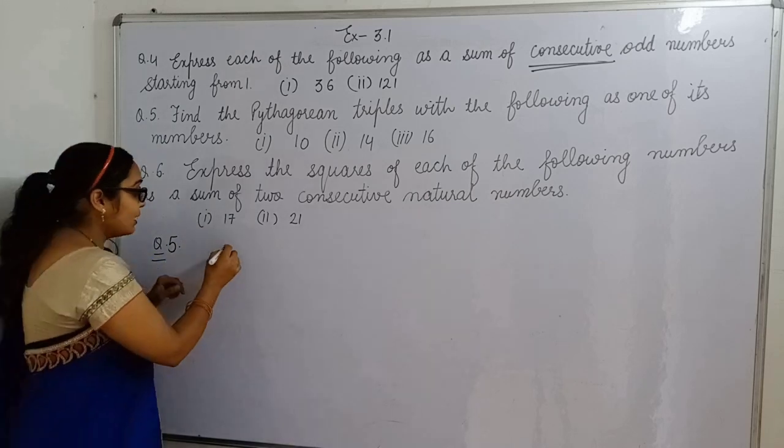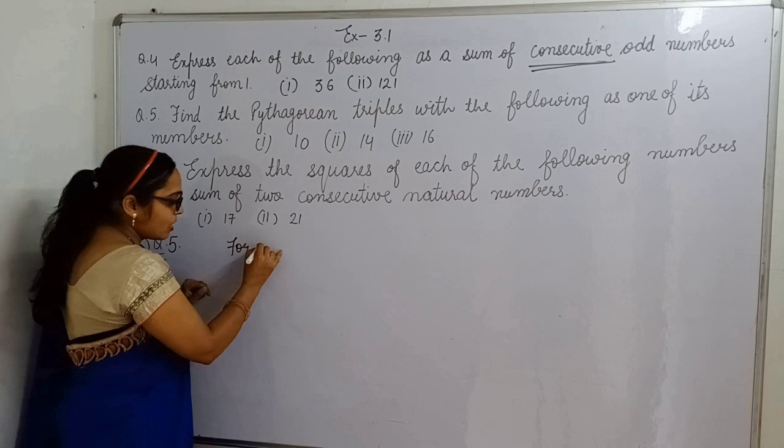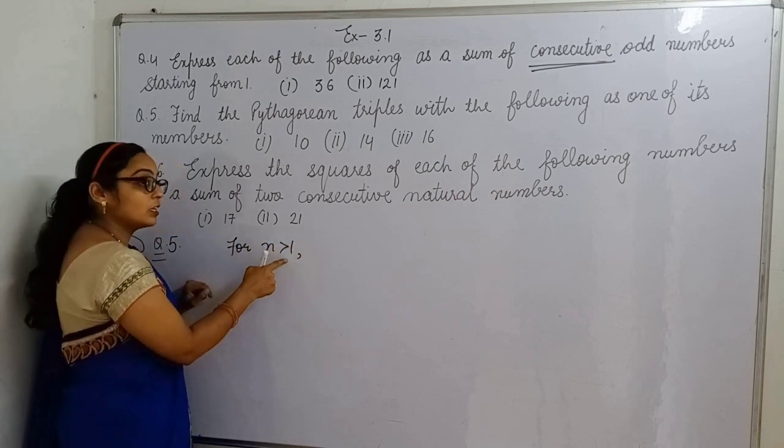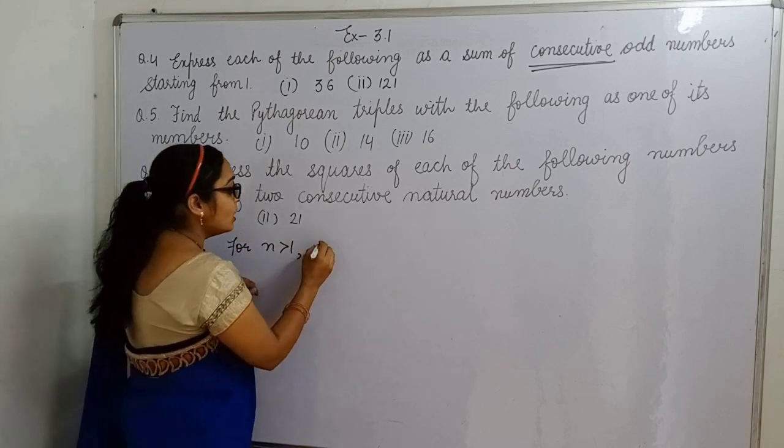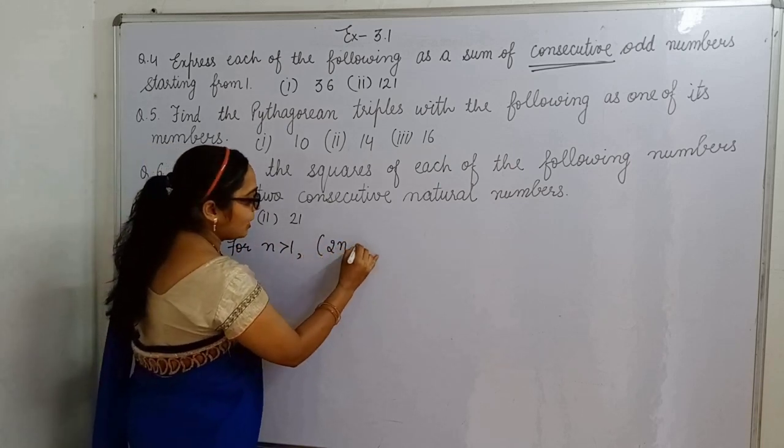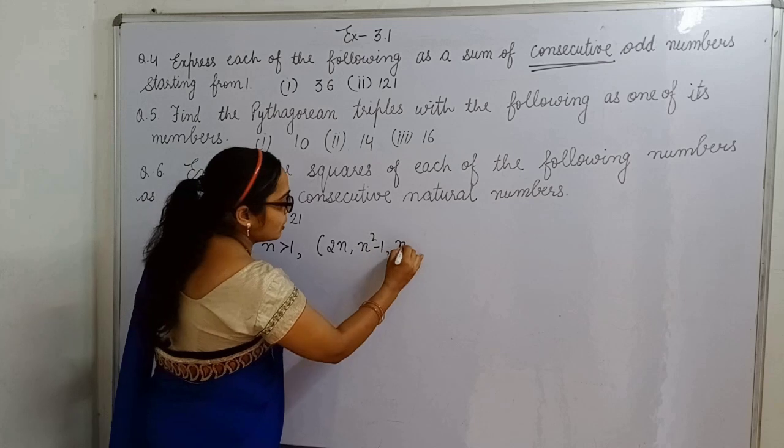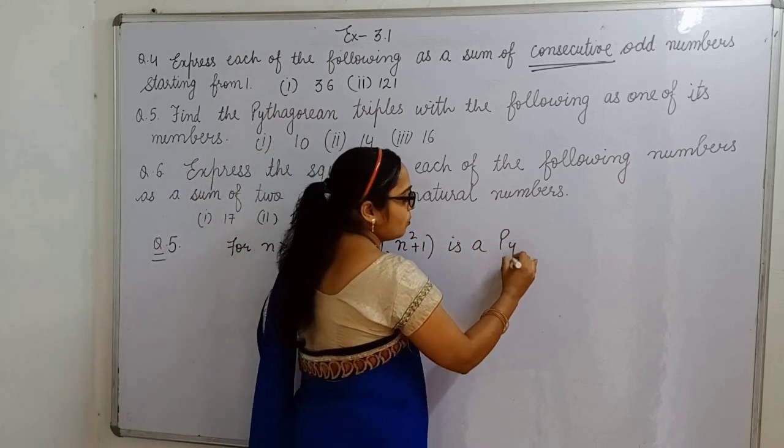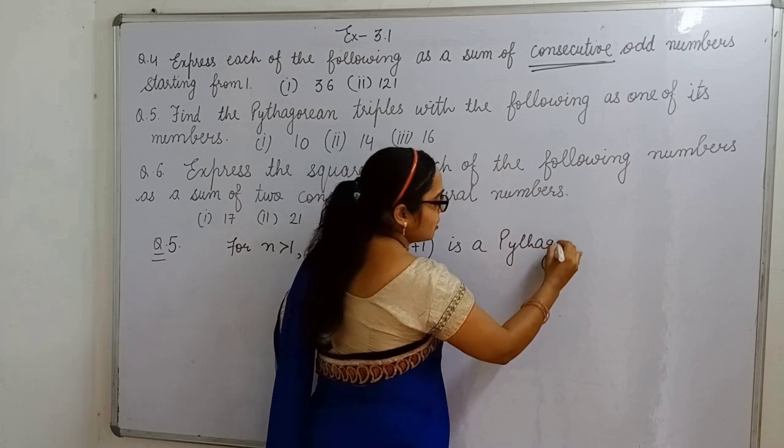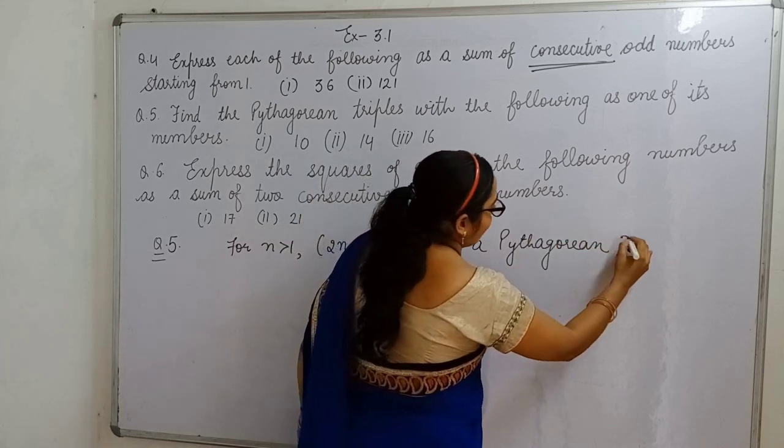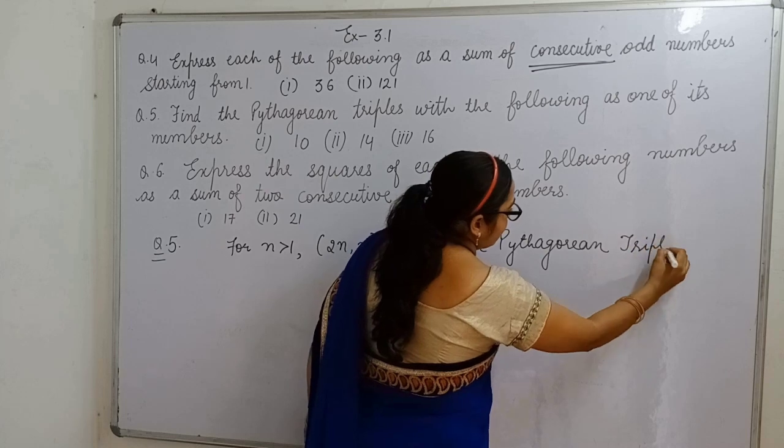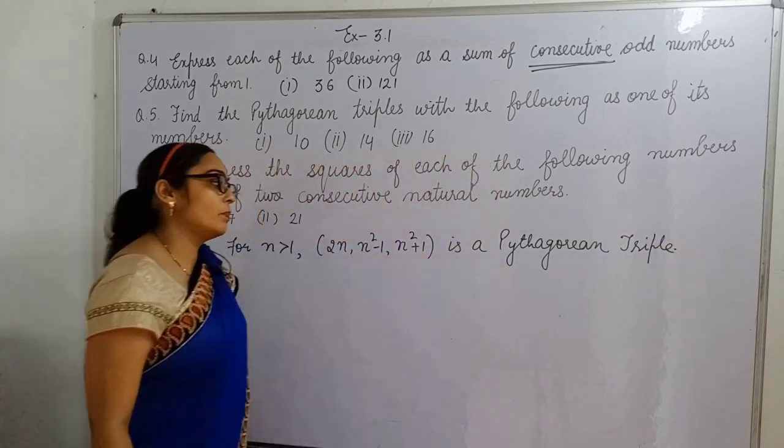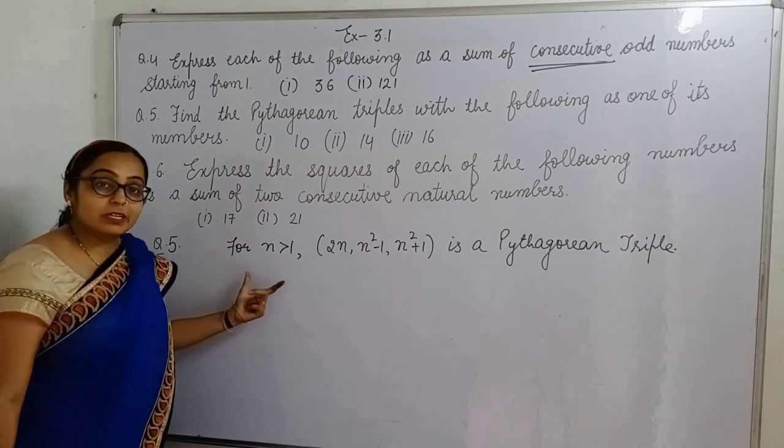I have told you that for n is greater than one, only greater than, n value greater than one. 2n, n square minus one, n square plus one is a Pythagorean triplet. This is a Pythagorean triplet, for n is greater than one.